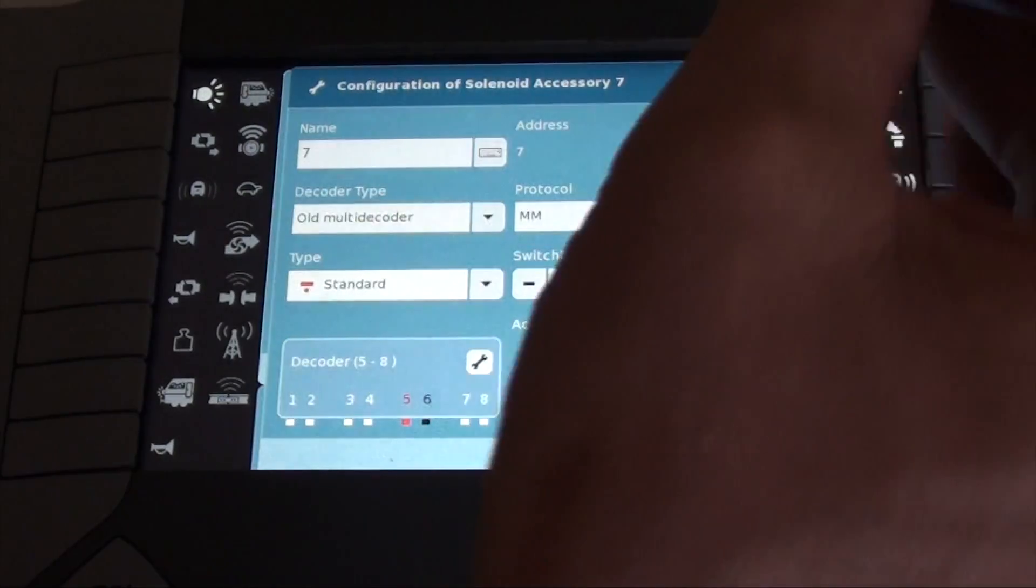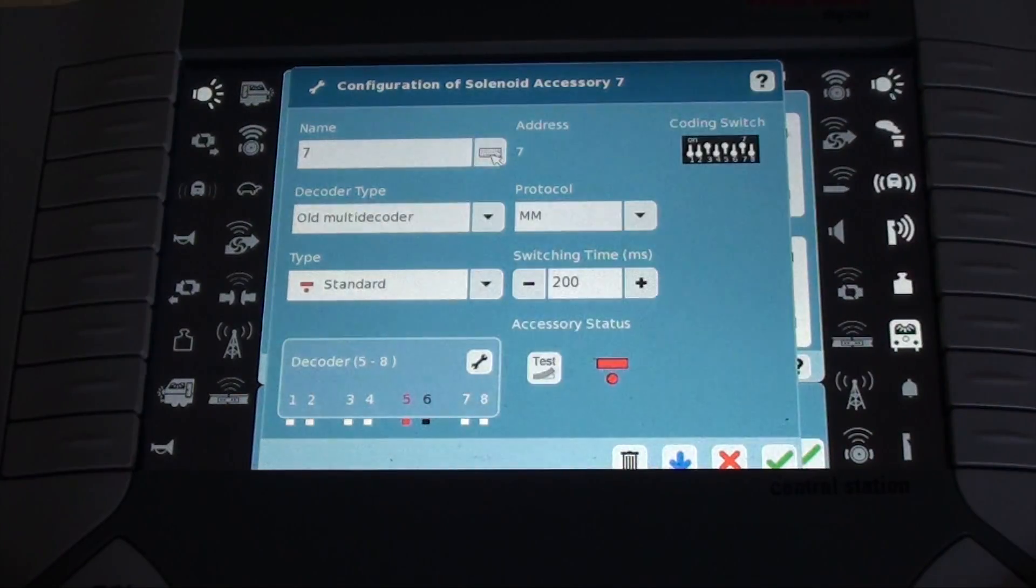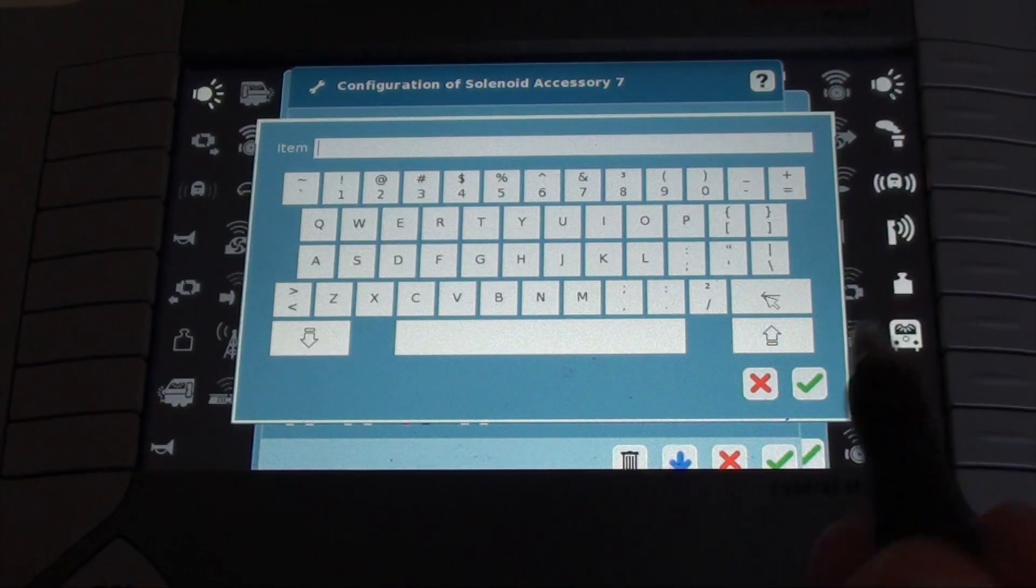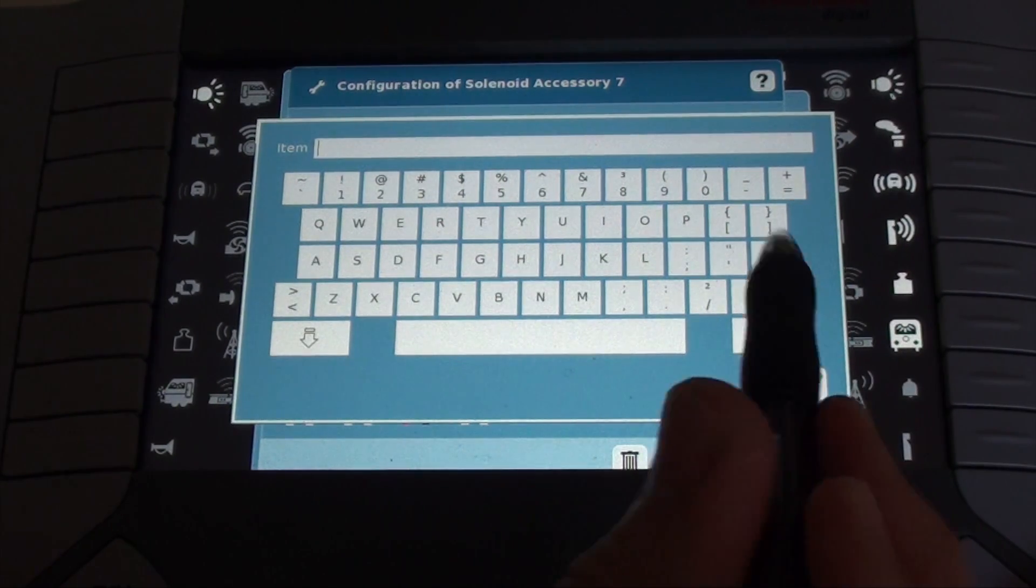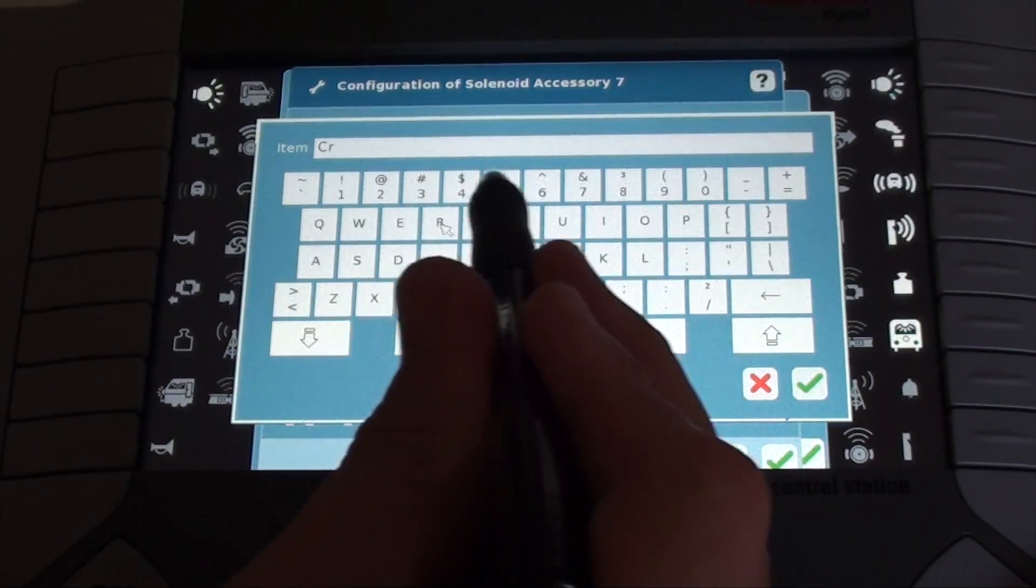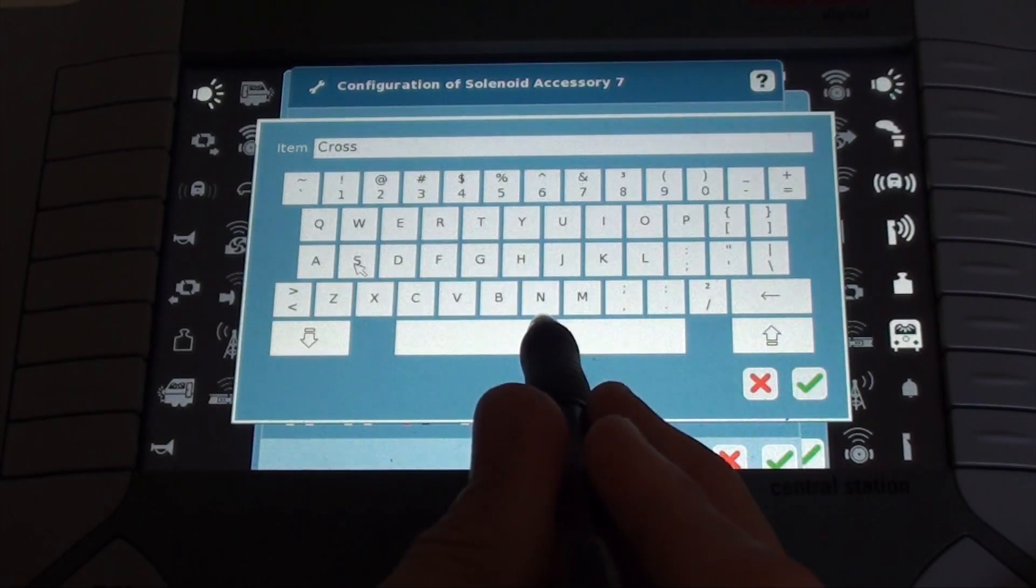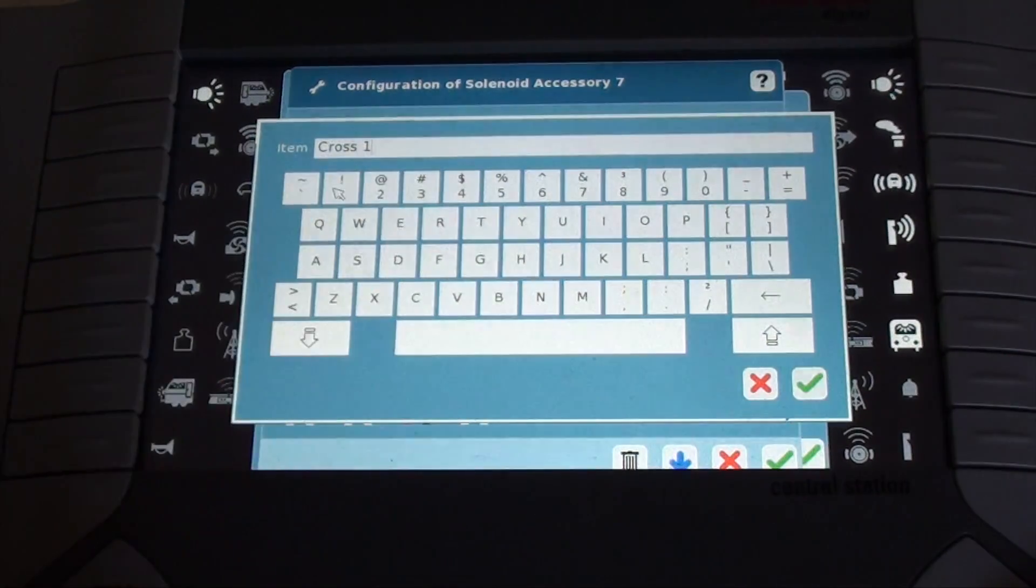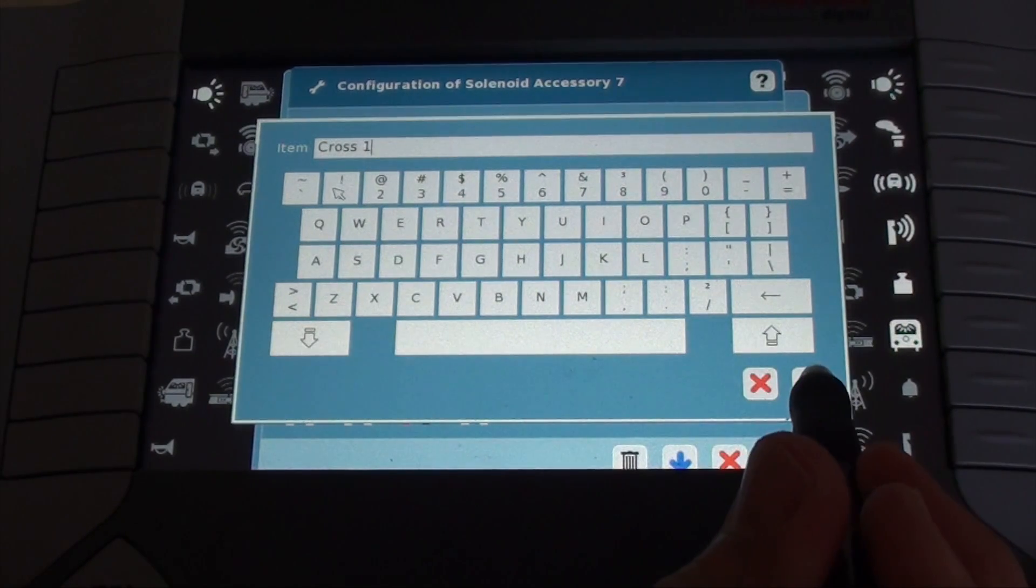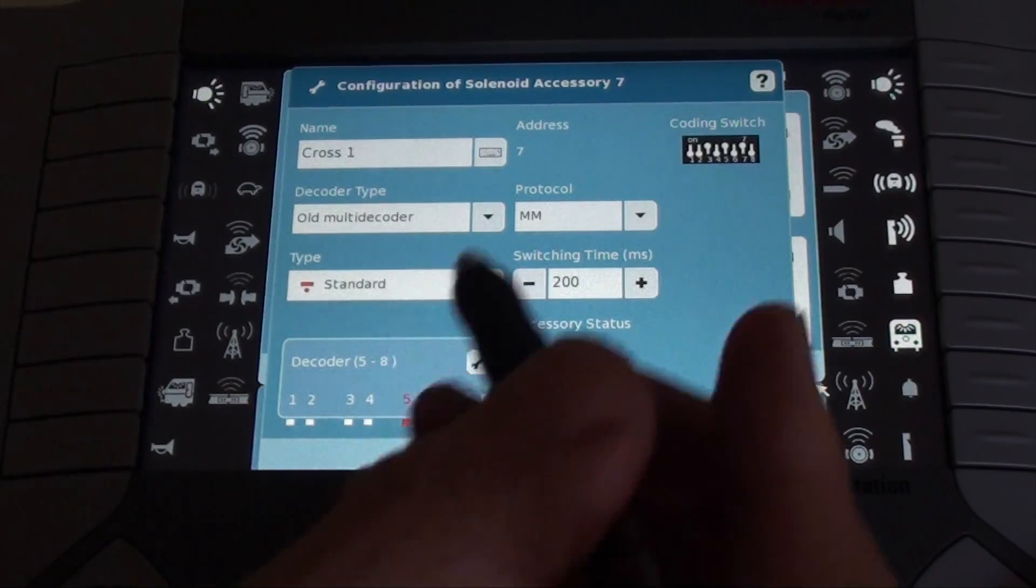Now we'll have to make some changes. First the name. In this example, I'll name it cross one. Capital C, R, O, S, S, space, one. I like it, yes. So I hit the green check mark. And you can see the name change to cross one.